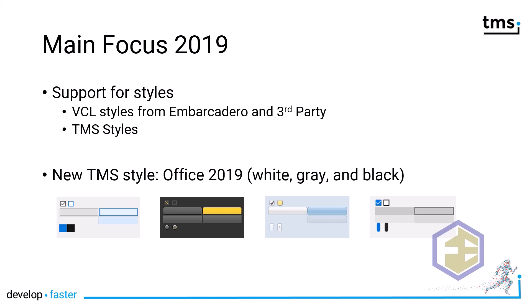As just mentioned, TMS recently introduced the new Office 2019 style, which is available in three variants: white, gray, and black. Gray is available in both light gray and normal gray. Here on the bottom of the slide you can see the four variations of the style.